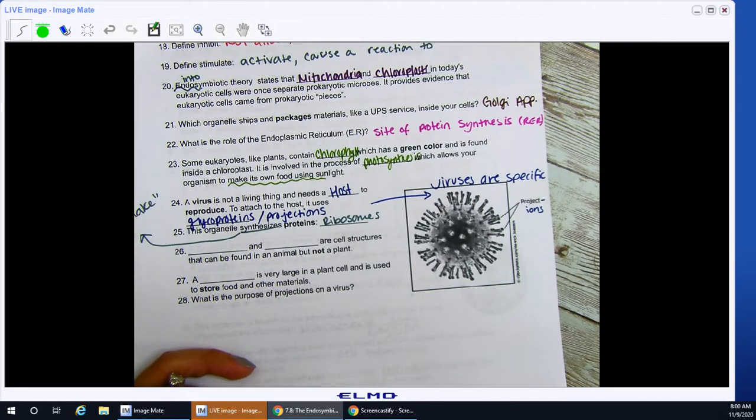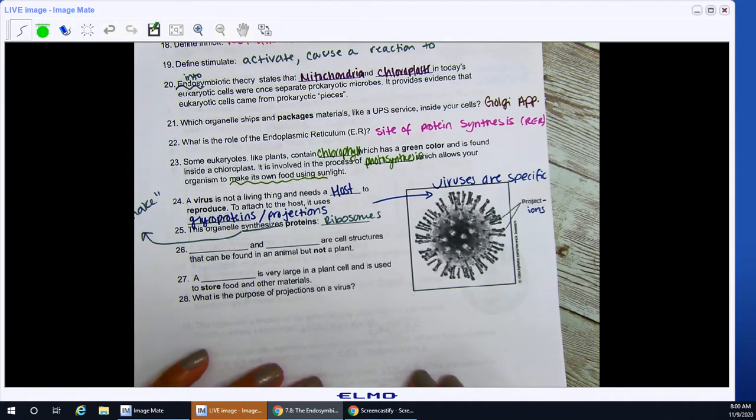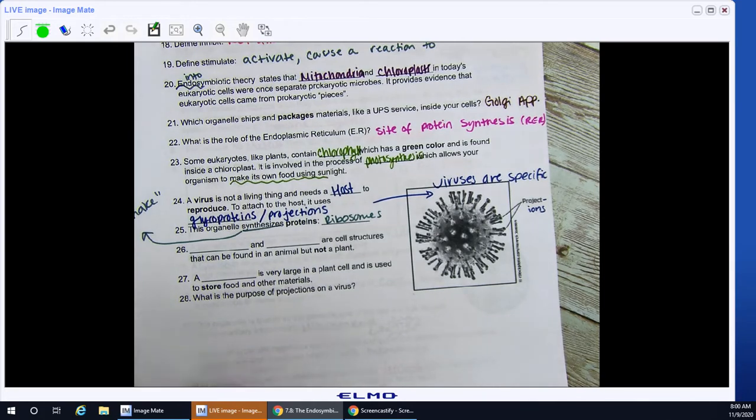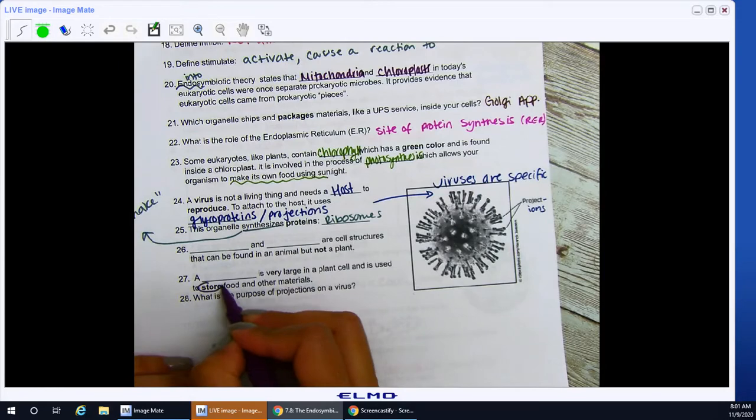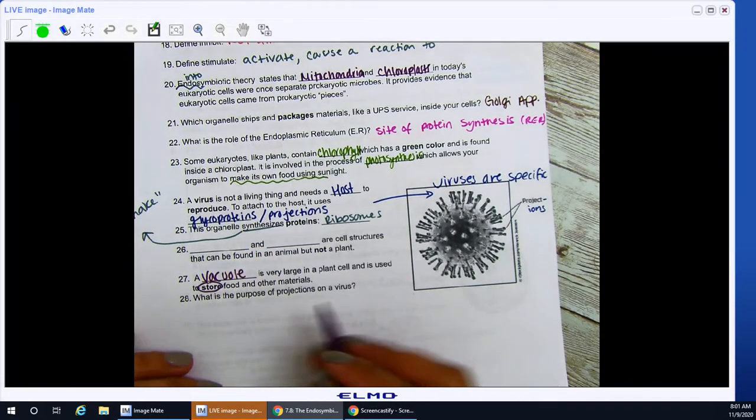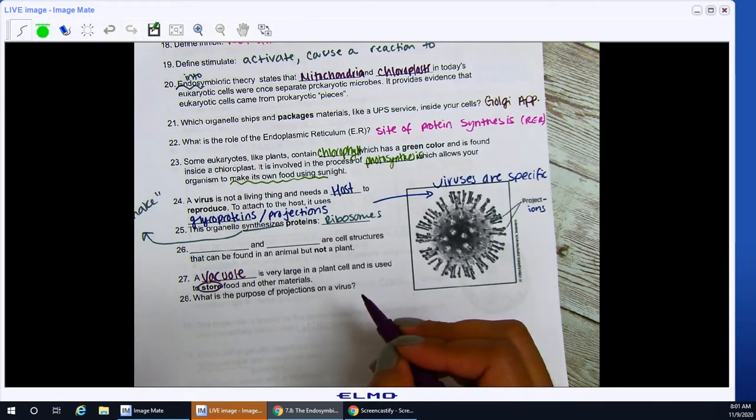Blank and blank are cell structures that can be found in an animal. But not a plant. So I need two organelles or structures. Cell structures that can be found in an animal. But not a plant cell. Well, I know I can find vacuoles. I know I can find DNA in an animal. What do I have that I cannot find in a plant cell? Let's go ahead and think about that one for a little bit. And then 27. A blank is very large in a plant cell and is used to store food. Okay, so storage here, storage, I already used to, I need to know. How about this one? Storage is key here for vacuole. Vacuole is very large in a plant cell. And it's smaller in animal cells.